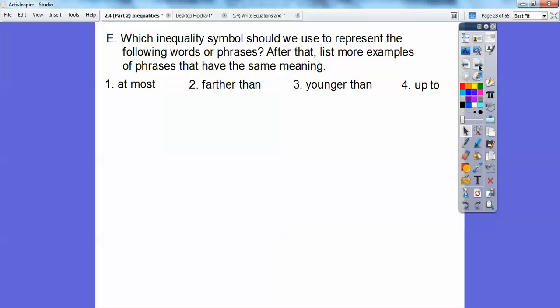Which inequality symbol should we use to represent the following words or phrases? After that, list more examples of phrases that have the same meaning. At most. I was doing this lesson today. I am at most 53. Could I be 53? The kid said yeah. Could I be 54? Kid said no. Could I be 52? Yeah, I could be 52 if I'm at most. So that's less than or equal to. Other phrases that associate with that are up to or no more than.